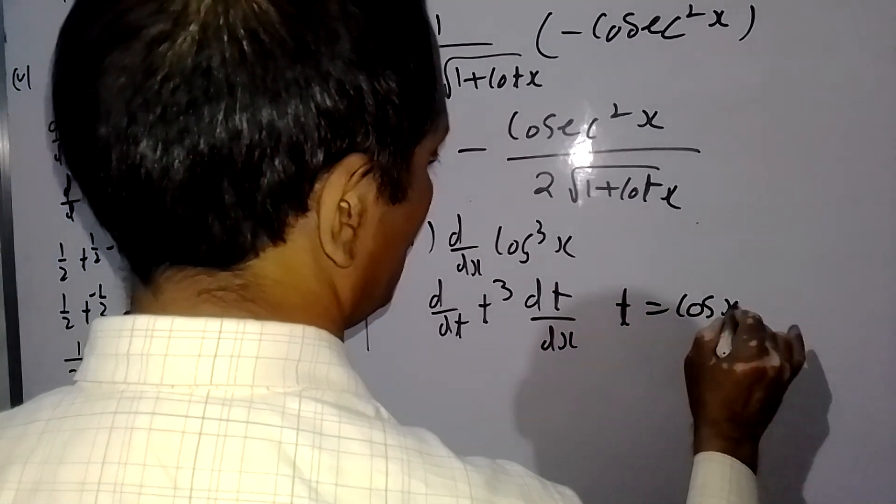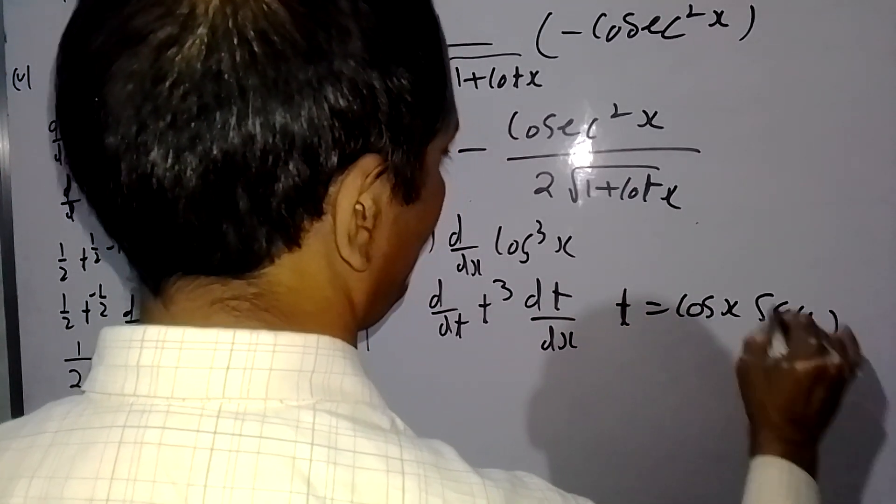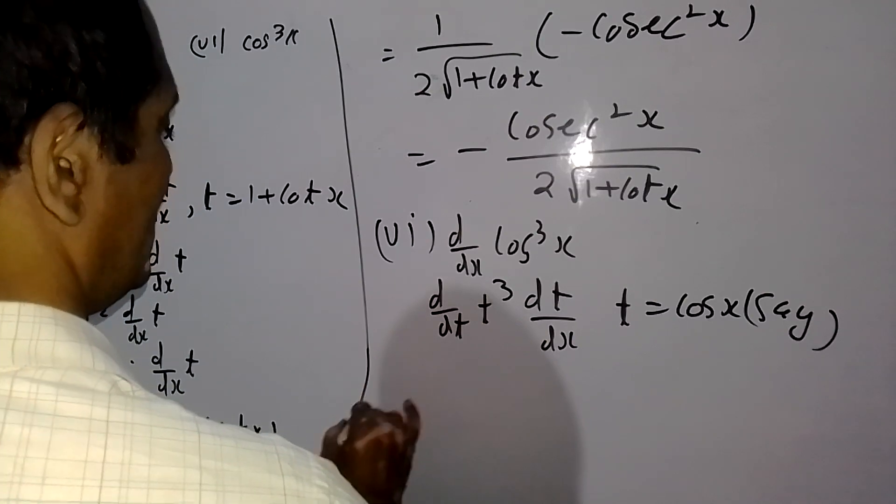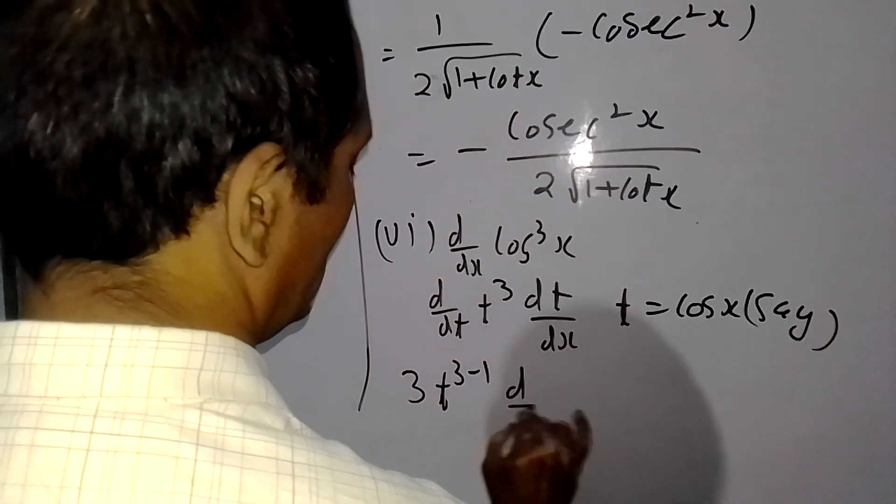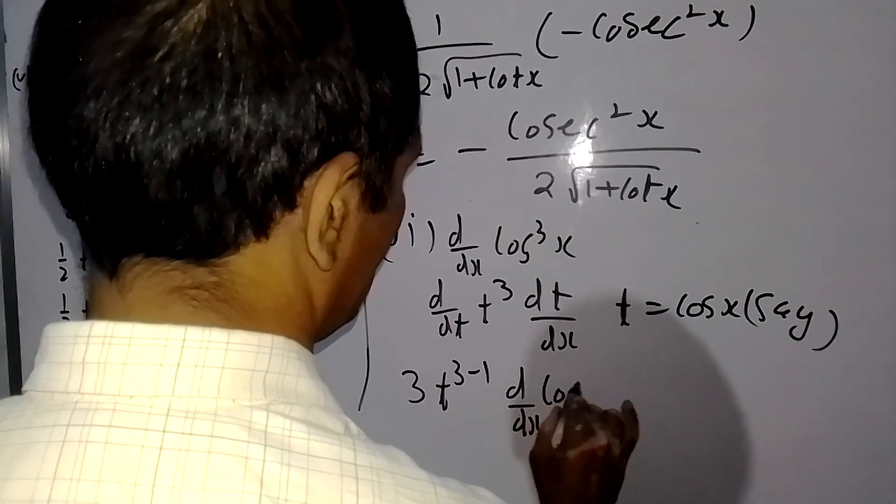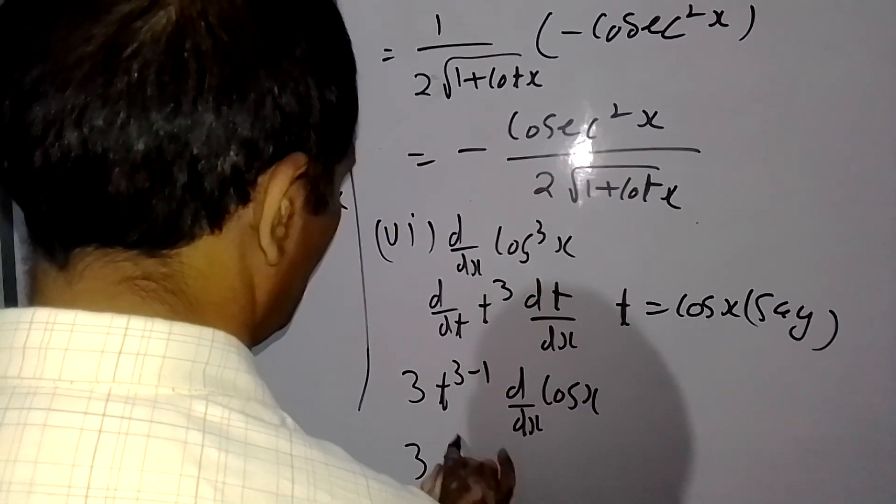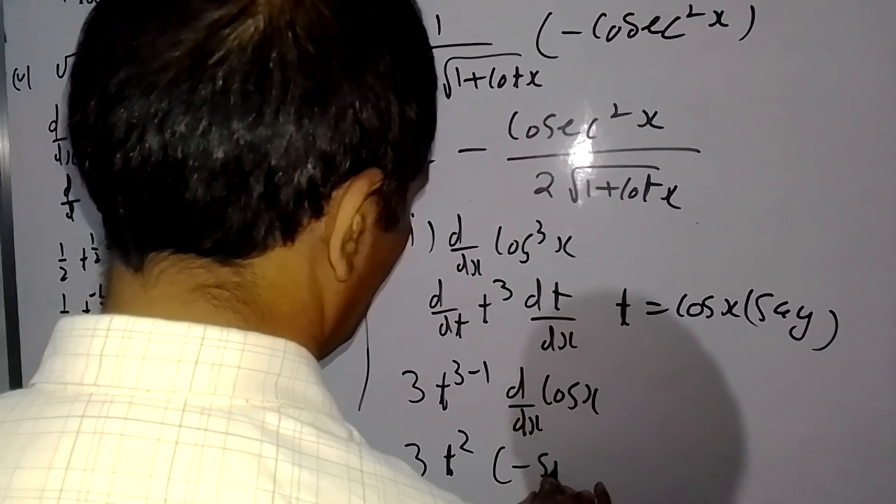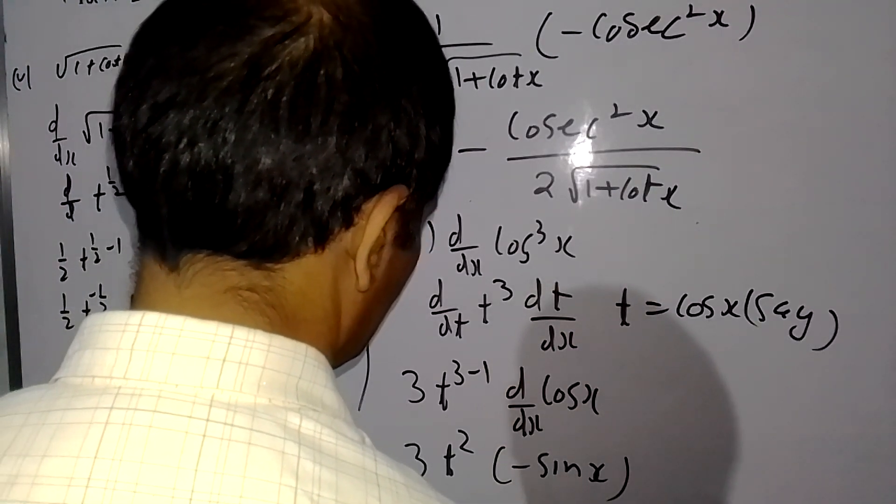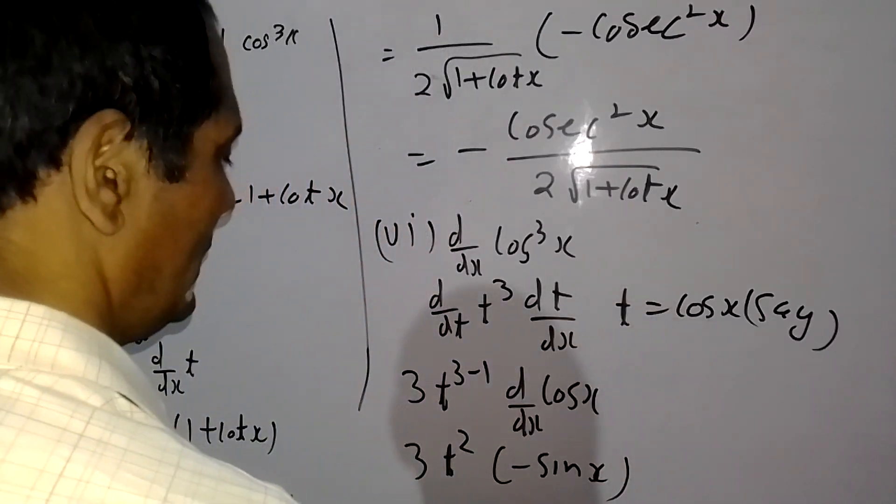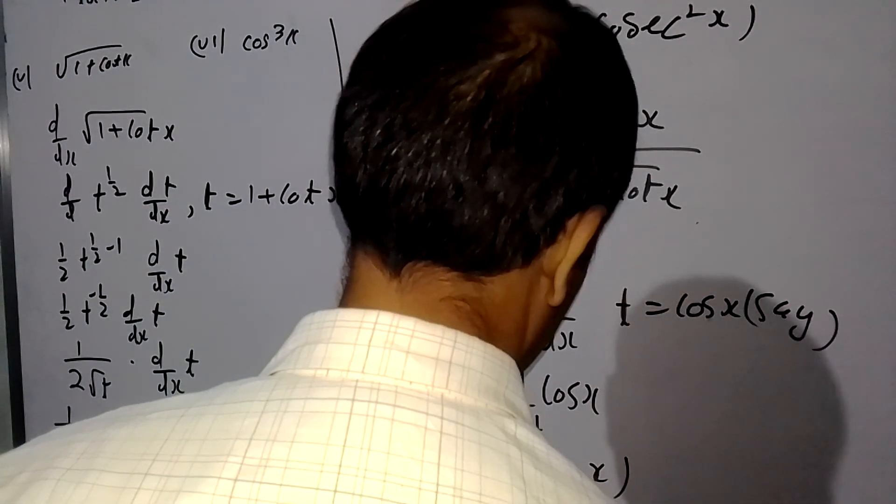Cos x. Now the index is 3, so 3 minus 1, d by dx of cos x. So 3 into T squared, minus sin x. So this is minus 3 sin of x into T squared.